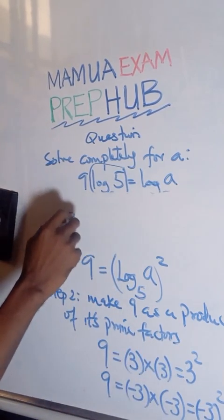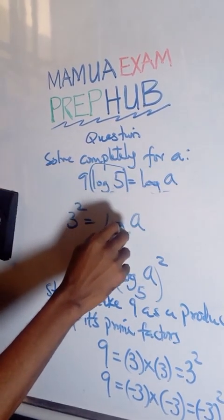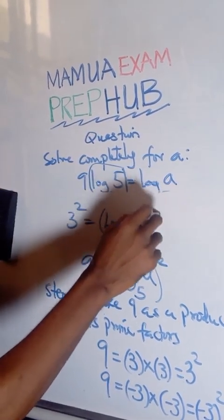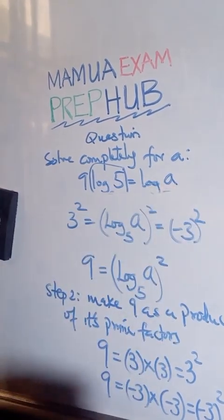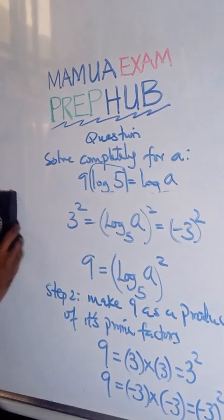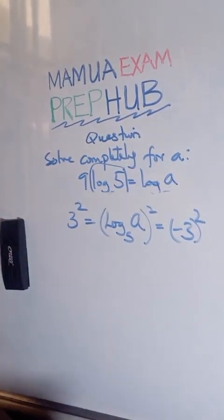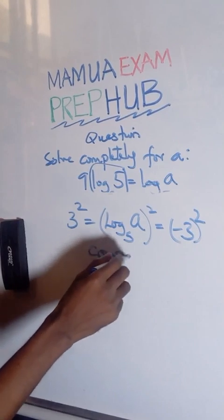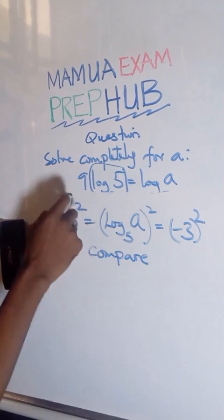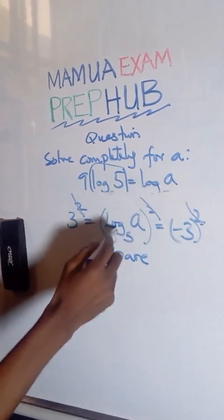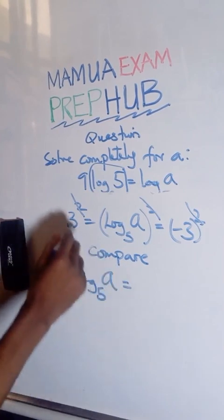So if I do that, I have 3 squared equals log base 5 of a squared, which equals minus 3 squared. So from this point, we can actually compare, if I compare this equation and this equation, these two can cancel out.